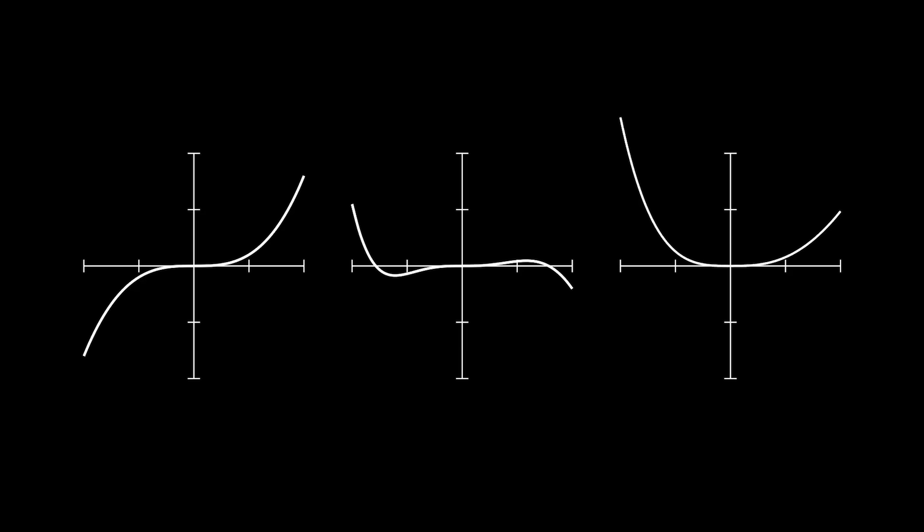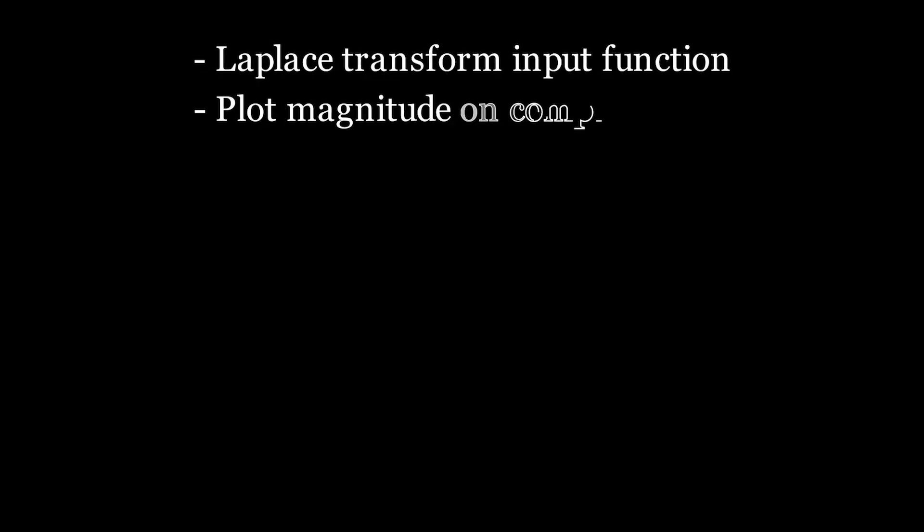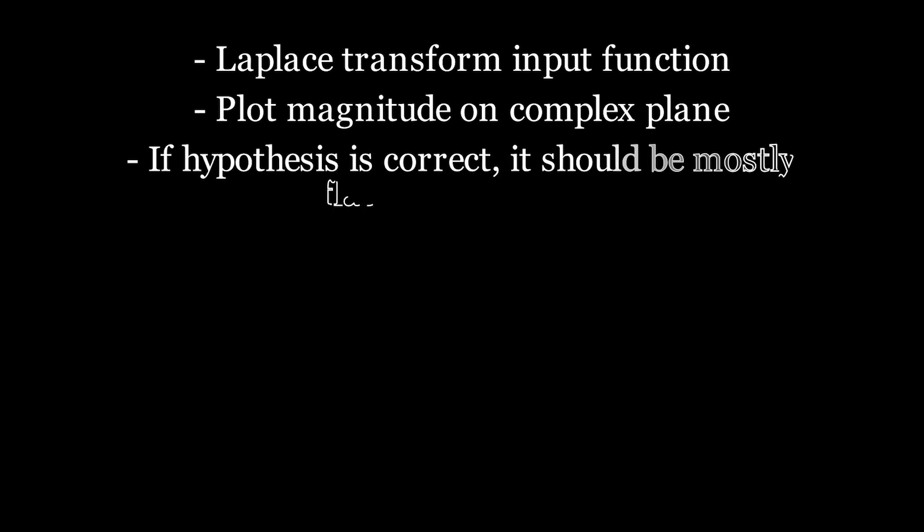So, to recap, this system we've built will take the Laplace transform of some input function, and we'll plot the magnitude of the Laplace transform at each point in the complex plane. Due to the comparison to the Fourier transform, we should theoretically see it be mostly flat, and have peaks wherever the input function has a component that is a frequency of one of these complex spirals. Whenever it does, both the real and imaginary component averages will be at an extreme.